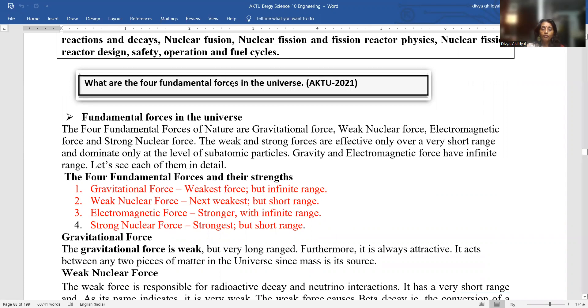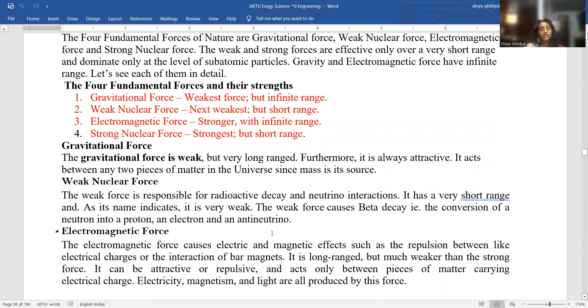What are the four fundamental forces in the universe? The four fundamental forces in the universe are gravitational force, which is the weakest force, weak nuclear force, electromagnetic force and strong nuclear force. Their strength goes like this from gravitational to weak nuclear to electromagnetic to strong nuclear force. Strong nuclear force is the strongest, but it is of very short range.